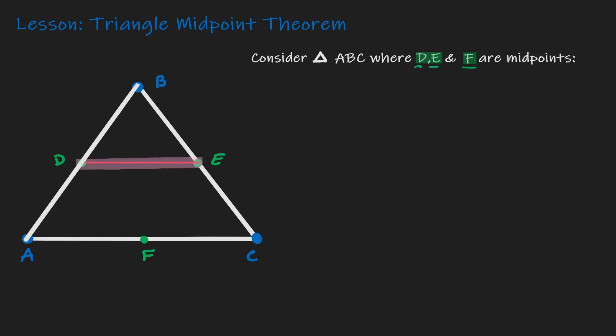DE has a special relationship with the side that is opposite, AC. And what is that relationship? Well, that relationship is that DE is parallel to its opposite side, which is AC.